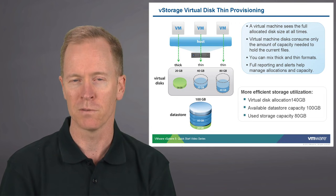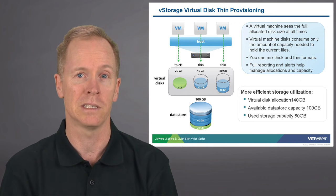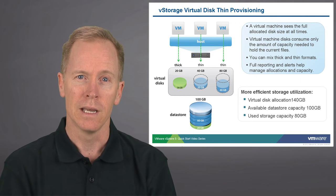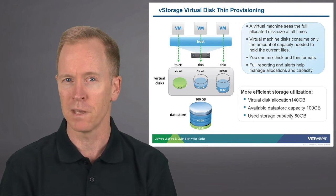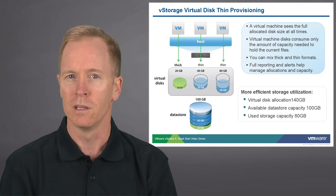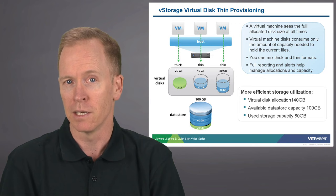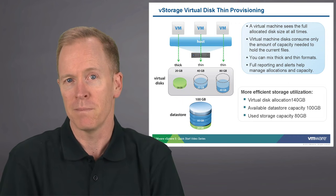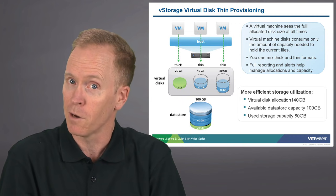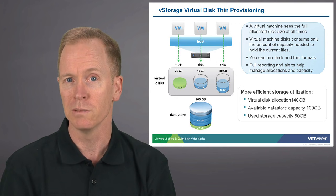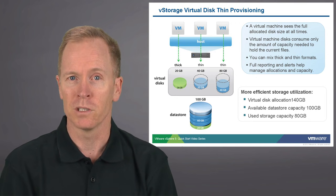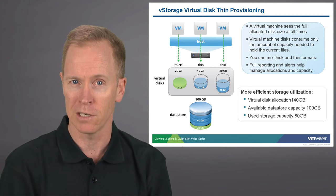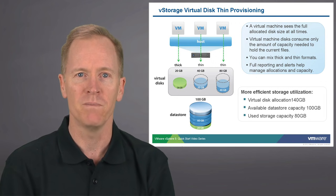The VM on the right also has a thin-provisioned virtual disk. We're creating a virtual disk which appears to be 80 gigabytes, but thus far we've only allocated 40 gigabytes. One of the main benefits of thin-provisioning is that we're able to defer the purchase of the actual disk space until a later point in time. The same dollars we spend on storage today will go farther and allow us to purchase more storage in the future, while giving virtual machines the appearance that they have their full allocation of storage space.